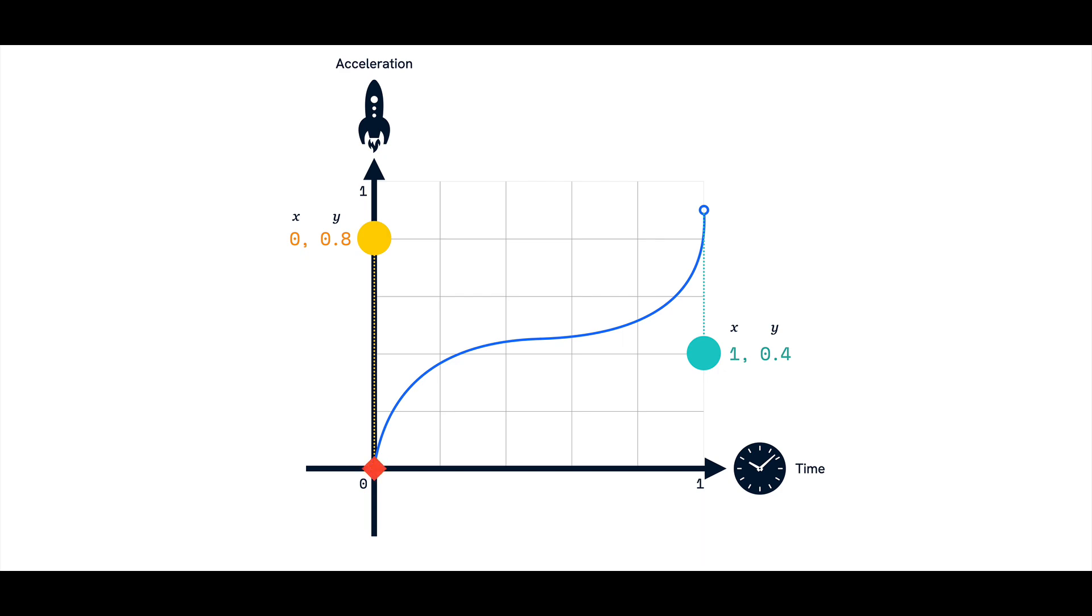Looking at this curve that's been produced, we can visualize how the animation will play out. We start by decelerating, then we move fairly constantly, and then we speed up towards the end.